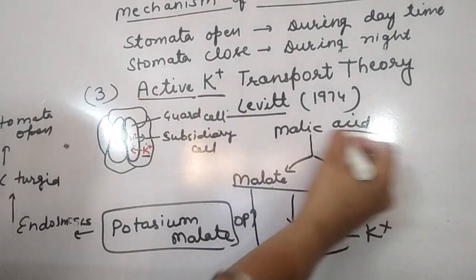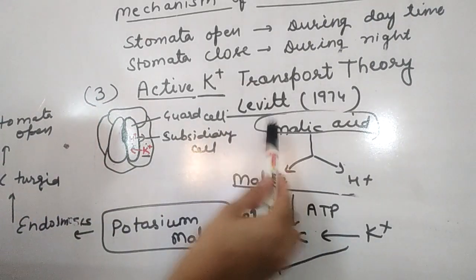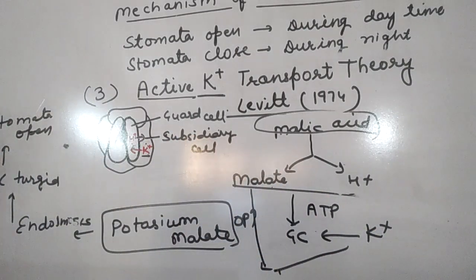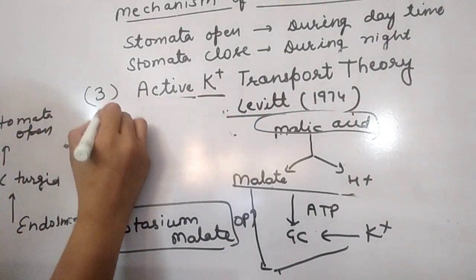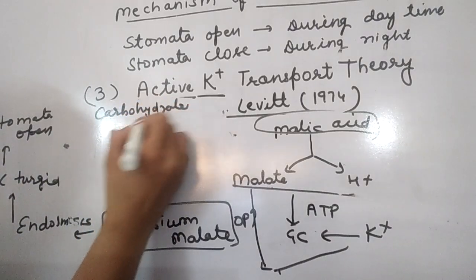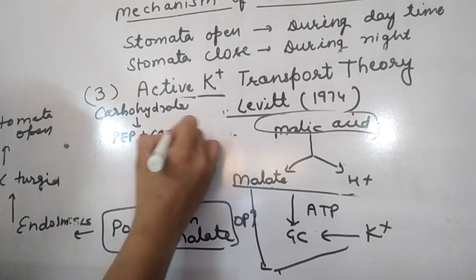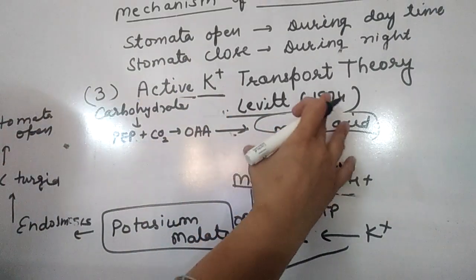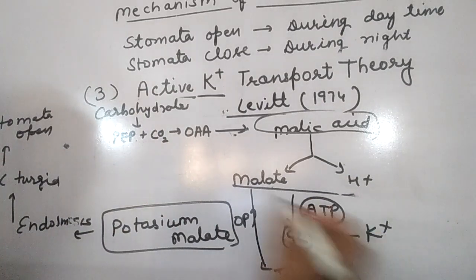Malic acid is produced in the guard cell during daytime through the following pathway: carbohydrates undergo glycolysis to produce phosphoenol pyruvic acid (PEP). PEP reacts with CO2 to form oxaloacetic acid, and oxaloacetic acid is then converted into malic acid. The entry of potassium ions into the guard cell is an active process driven by ATP.